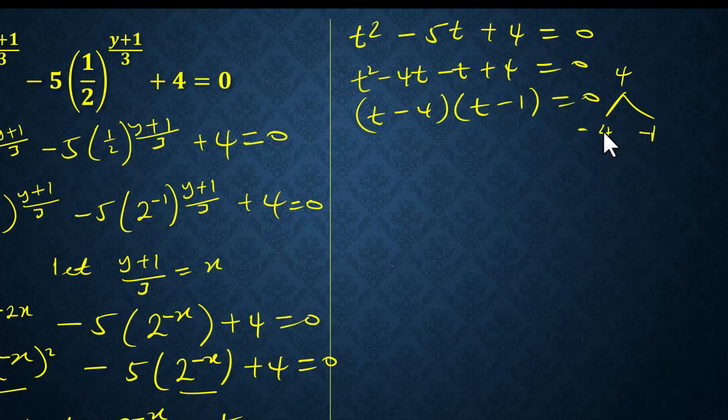So my t will be 4 and 1. I have two answers for t, that is 4 and 1.